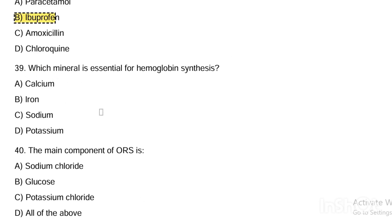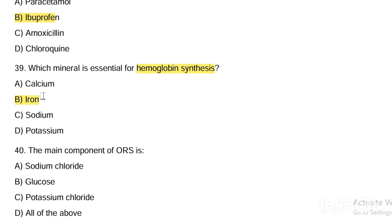Next question. Which mineral is essential for hemoglobin synthesis? Option A, calcium. Option B, iron. Option C, sodium. Option D, potassium. Answer: iron is essential for hemoglobin synthesis.